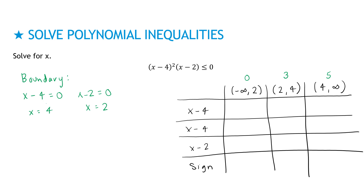Now plug in the test values. For 0: 0 minus 4 is negative, 0 minus 4 is negative, 0 minus 2 is negative. Negative times negative is positive, times another negative gives negative. For 3: 3 minus 4 is negative, 3 minus 4 is negative, 3 minus 2 is positive. Negative times negative times positive is positive. For 5: 5 minus 4 is positive, 5 minus 4 is positive, 5 minus 2 is positive. Positive times positive times positive is positive.